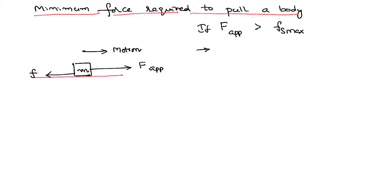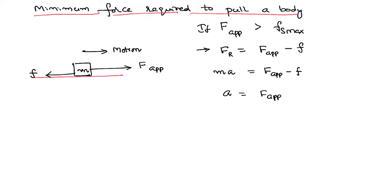Once the body is in the state of motion, it has a resultant force acting on it. The direction of the resultant force is F applied minus F frictional, along the direction of the applied force. Using Newton's second law, Ma equals F applied minus frictional force. The acceleration can be written as F external minus μ times normal reaction, where normal reaction equals mg, divided by m.